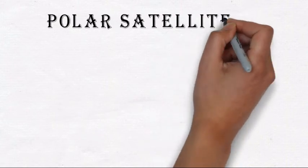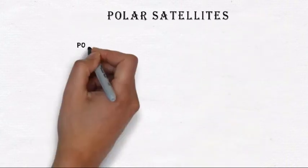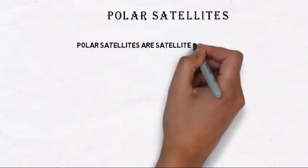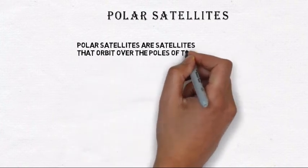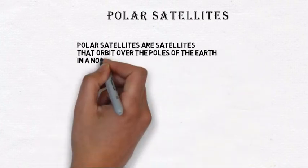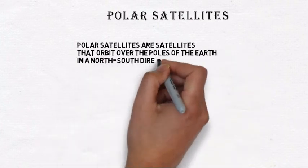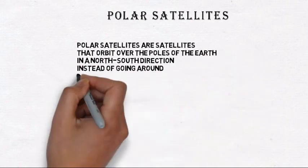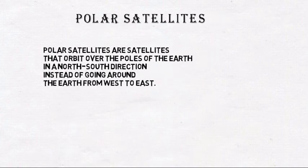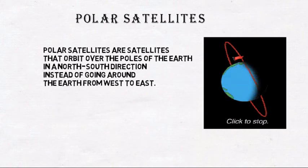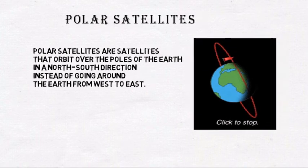Polar satellites: Polar satellites are satellites that orbit over the poles of the earth in a north-south direction, instead of going around the earth from west to east.